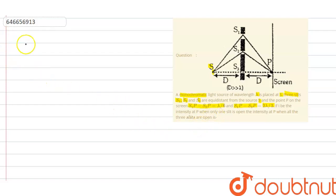So first of all, let us see what is given to us. We have been given S1P minus S2P is lambda by 6.